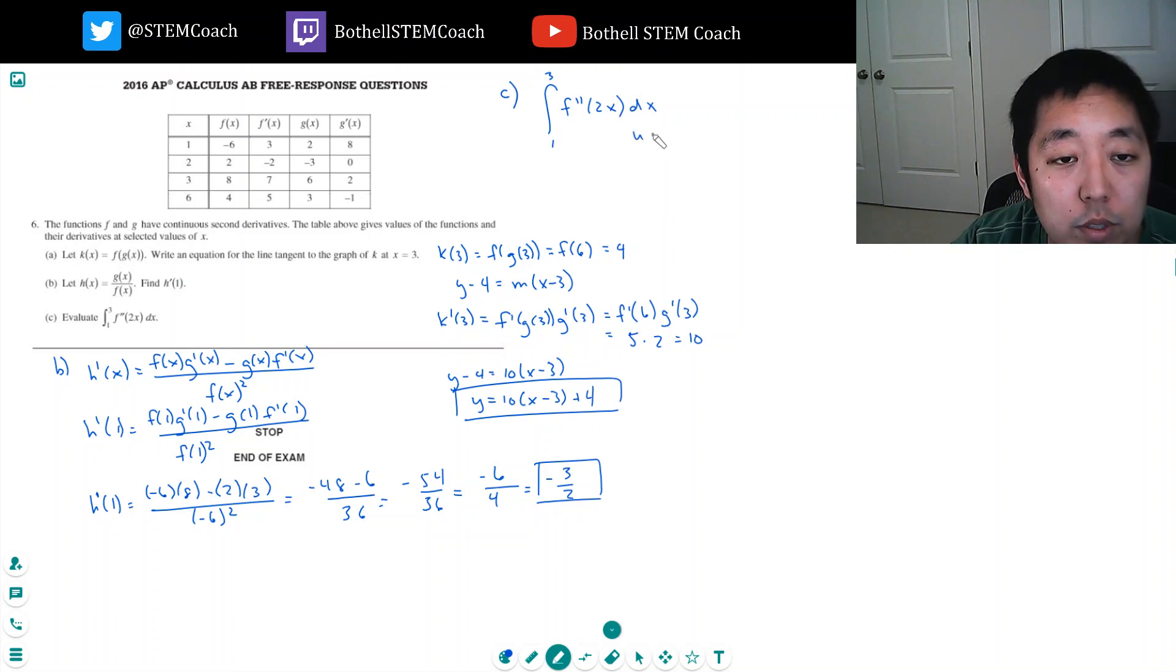I'm going to do a u substitution just to make sure I get the signs right. So one half du equals dx, and then my bounds of integrals are going to change. u of 3 is equal to 6, and then u of 1 is equal to 2.